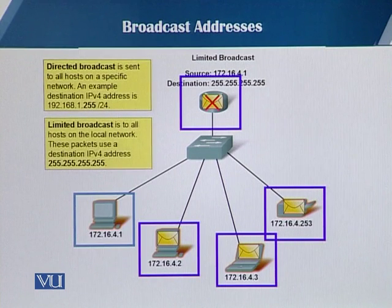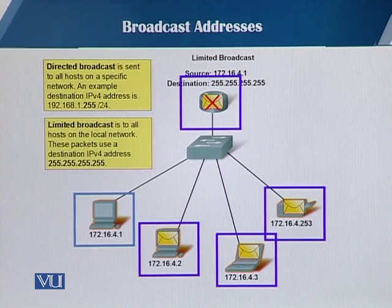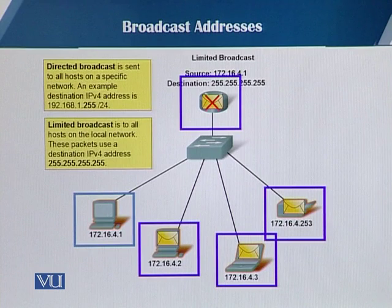There are two types of broadcast. One is directed broadcast, which is sent to all the hosts on a specific network — the network part with .255, all ones in the host part, sending packets to all hosts on a particular network. The other type is limited broadcast, which sends packets to hosts on the local network, and these packets have a destination address of 255.255.255.255.